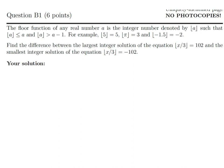The floor function of any real number a is the integer number denoted by ⌊a⌋, such that ⌊a⌋ is less than or equal to a, and ⌊a⌋ is greater than a minus 1. For example, ⌊φ⌋ is 5, ⌊π⌋ is 3, and ⌊−1.5⌋ is negative 2. Find the difference between the largest integer solution of ⌊x/3⌋ = 102 and the smallest integer solution of ⌊x/3⌋ = −102.